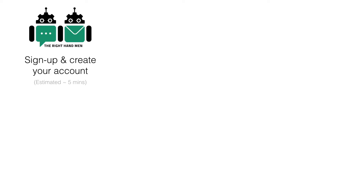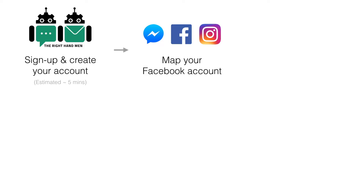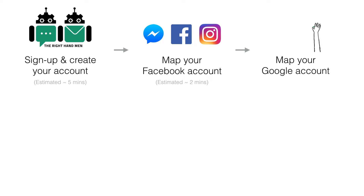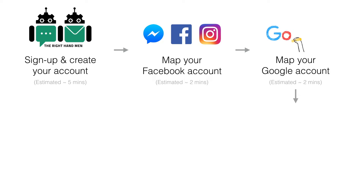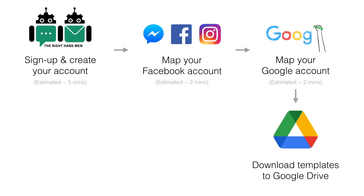First, you sign up and create your account with Right Hand Men. Then, you map your Facebook business page by logging in to Facebook and granting permissions. Next, you map your Google or G Suite account to Right Hand Men. Now, you can download the workflow template for outbound campaigns and customize it to design an automated conversation flow to address your customer grievances.